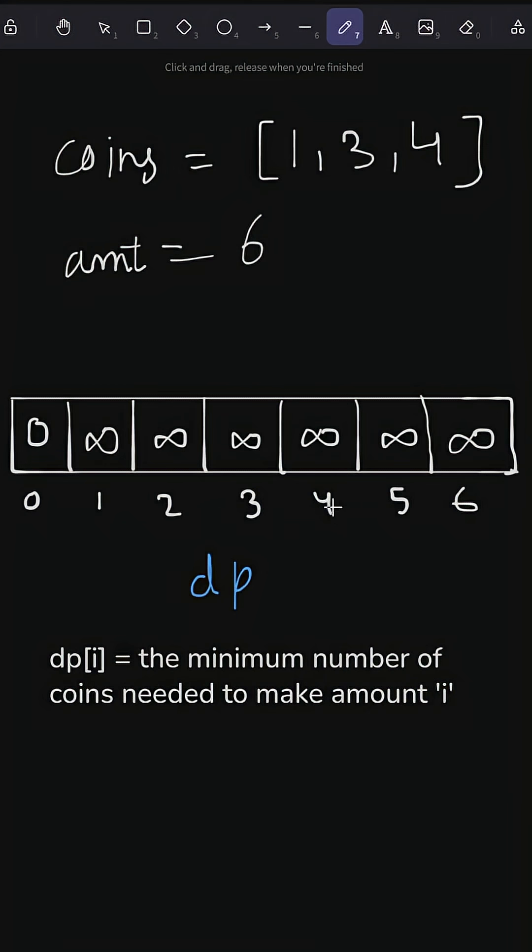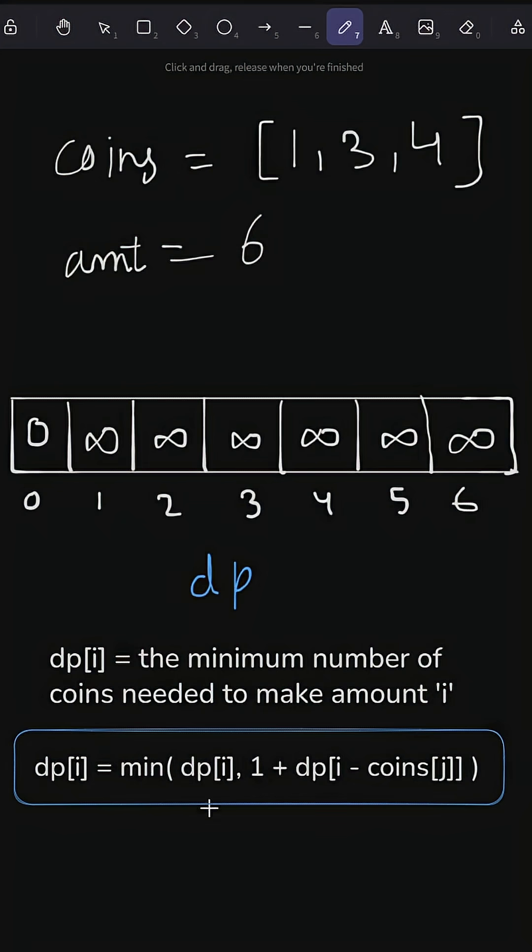For each amount, try every coin and pick the minimum. The dp relation here will be dp[i] = min(dp[i], 1 + dp[i - coins[j]]). i is moving through amounts and j is moving through coins. So for every amount, we need to try each and every coin. For 0, we already know.